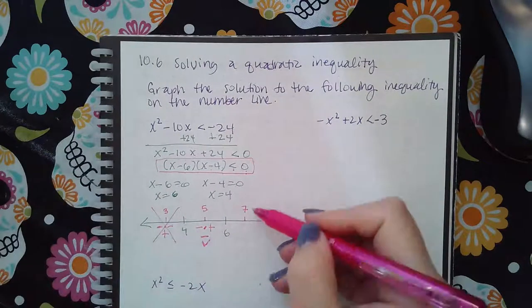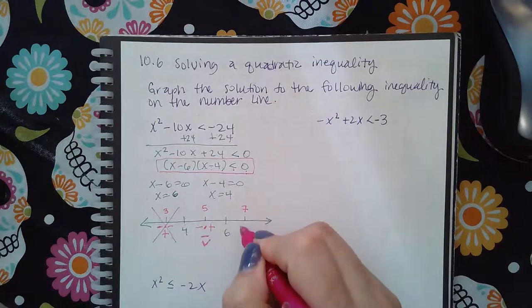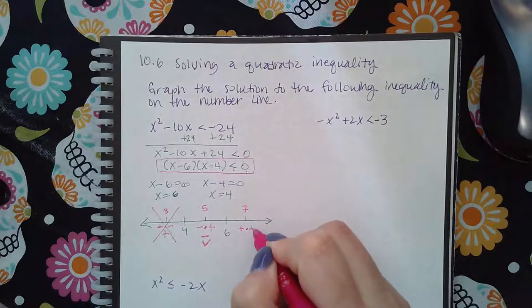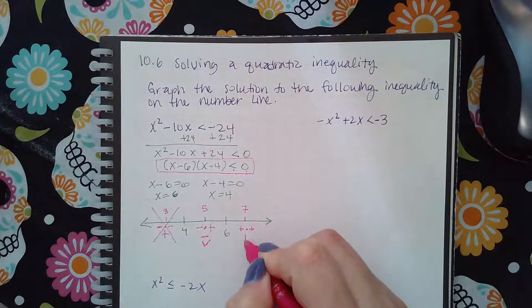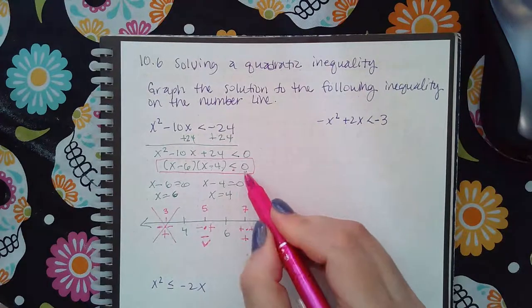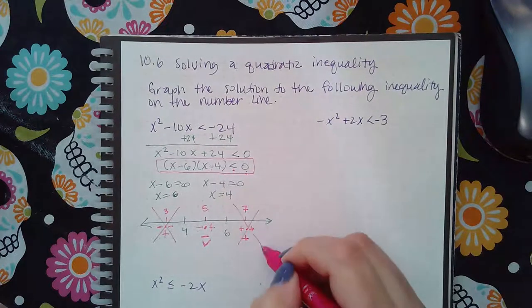Then for the seven, seven minus six is positive one, seven minus four is positive three. So when I multiply the two positives, I get a positive. Positives are not less than zero, so this section does not work.